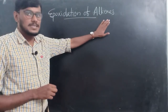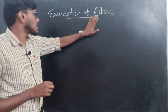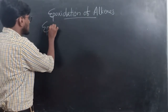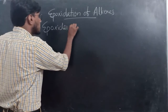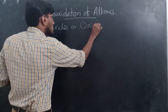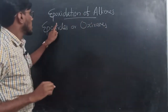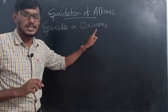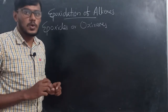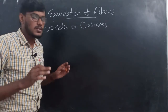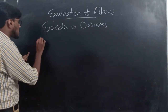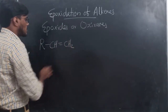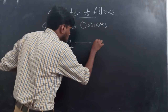Here, alkenes undergo a reaction called epoxidation and form products called epoxides — also called oxiranes. Epoxides or oxiranes are formed when alkenes undergo epoxidation reactions. To understand what epoxides or oxiranes are, we will check with an example. Take an alkene.